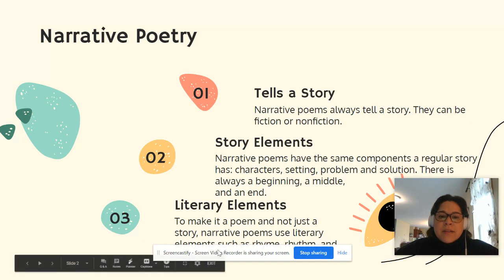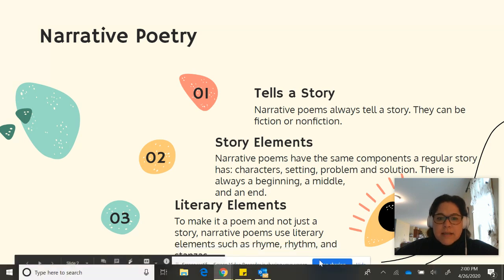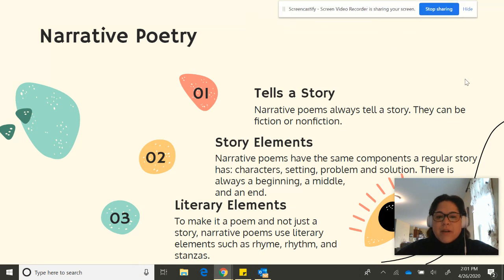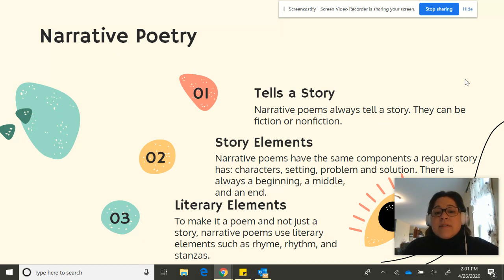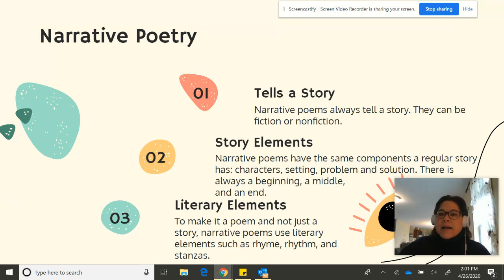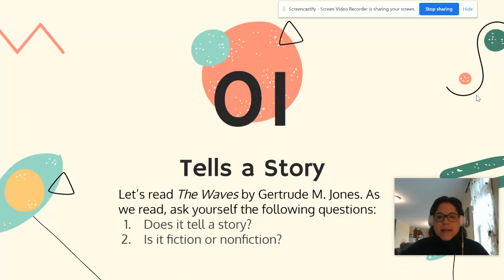Now let's look at the last component. The last component we look for in deciding if a poem is narrative poetry is what literary elements it has. To make it a poem and not just a story, narrative poems use literary elements such as rhyme, rhythm, and stanzas. So we're going to practice with each one of those elements today.